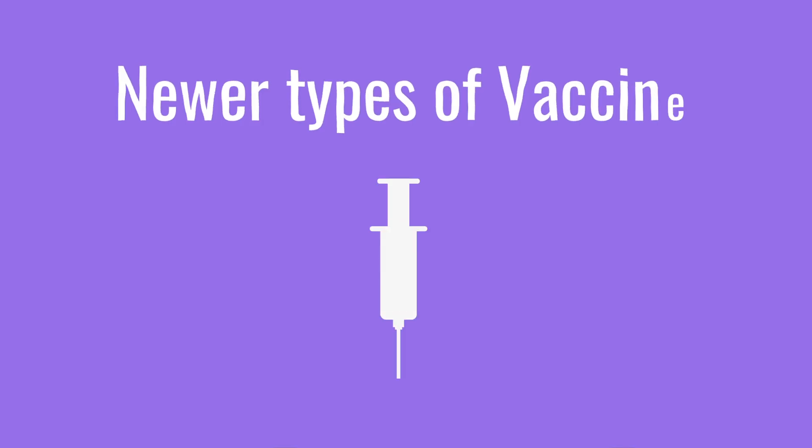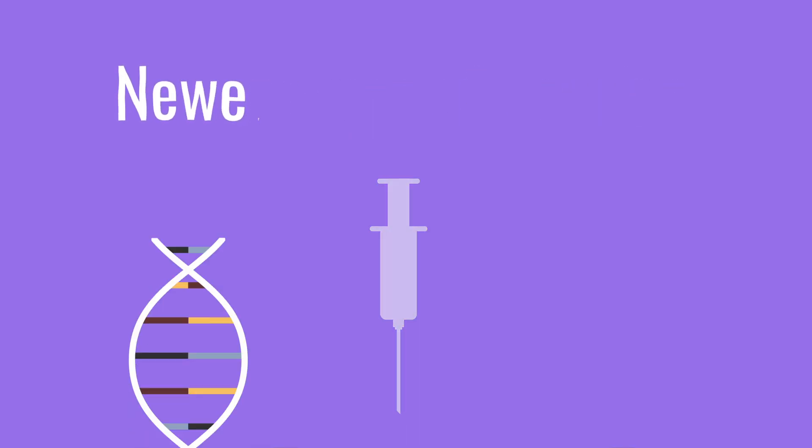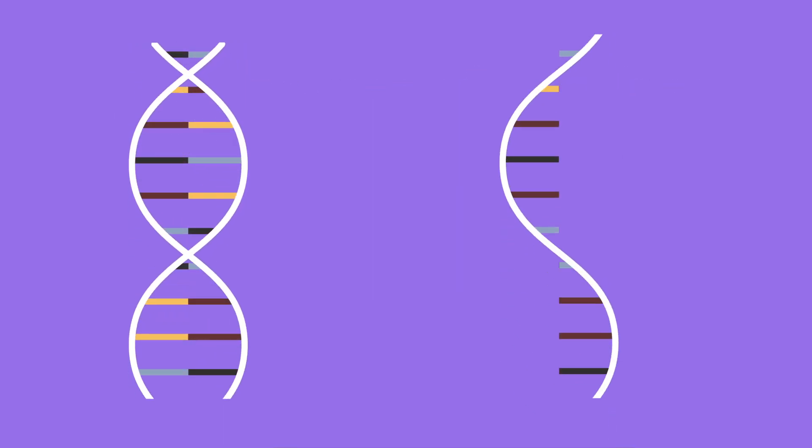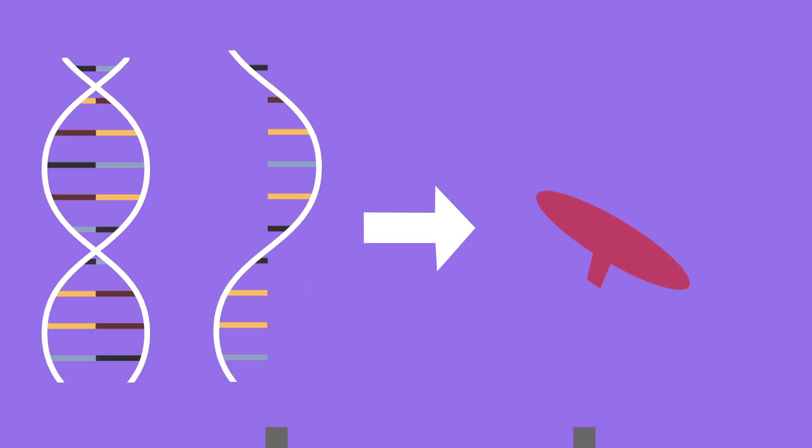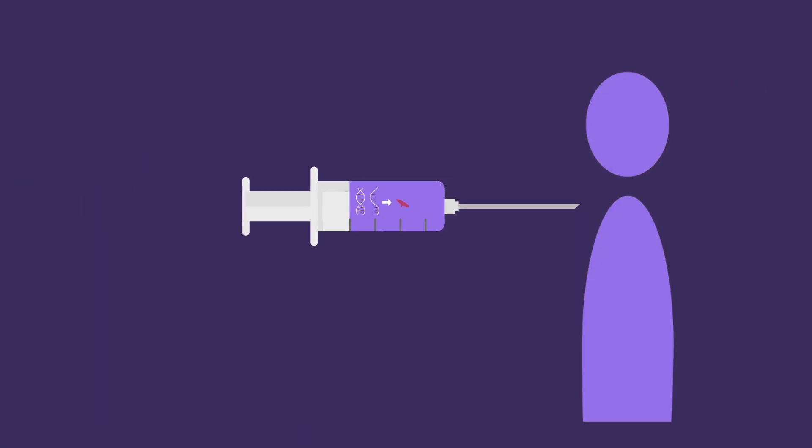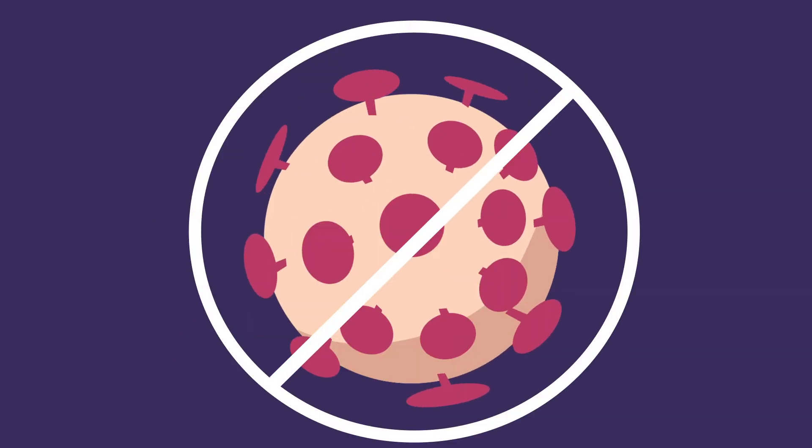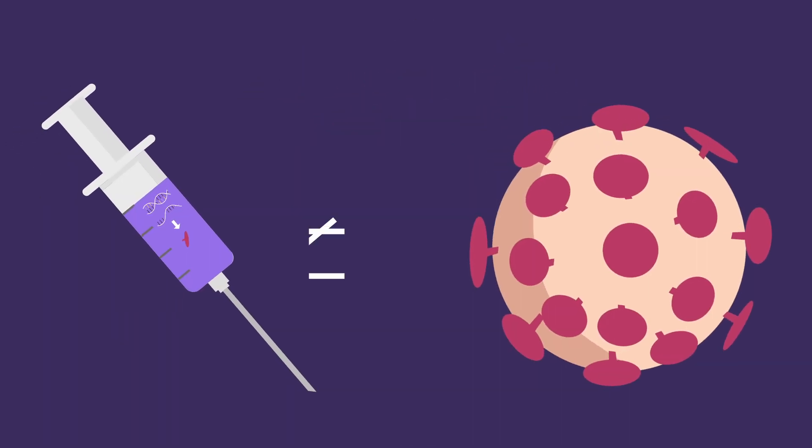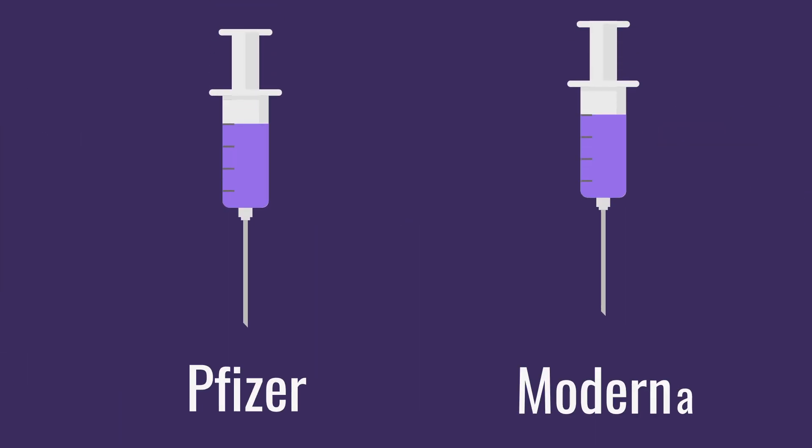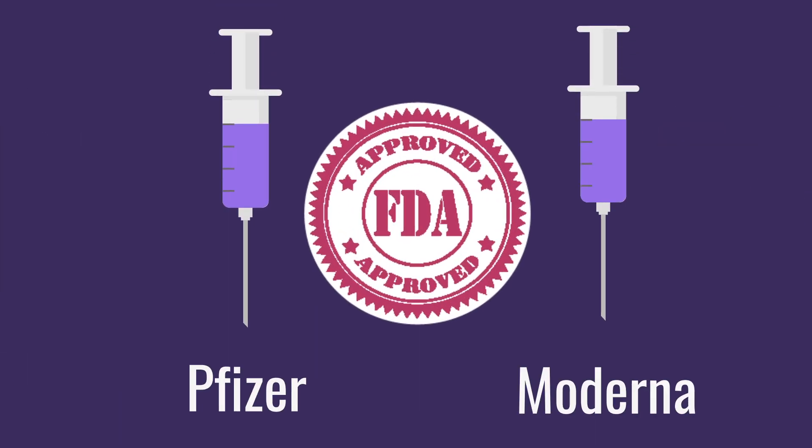There are some newer types of vaccines that are in development too. One new category is to inject DNA or RNA that codes for viral proteins into a person. Thus the person can develop immunity to those proteins without ever being exposed to the entire virus, so there's a minimal chance of disease from the vaccine itself. The Pfizer and Moderna vaccines, which have both been given emergency use authorization by the FDA, are both RNA vaccines.